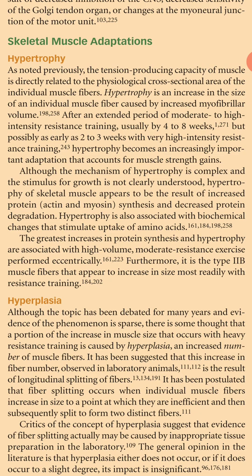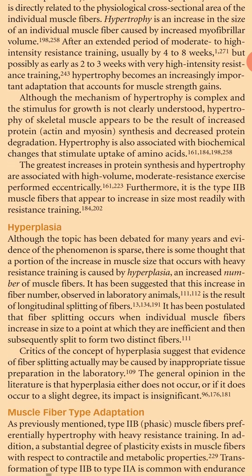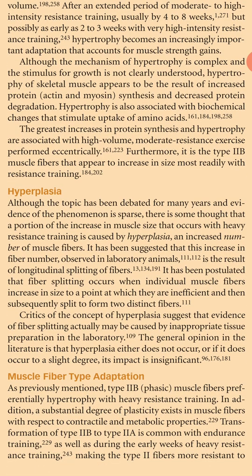Although the mechanism of hypertrophy is complex and the stimulus for growth is not clearly understood, hypertrophy of skeletal muscle appears to be the result of increased protein actin and myosin synthesis and decreased protein degradation. Hypertrophy is also associated with biochemical changes that stimulate uptake of amino acids. The greatest increases in protein synthesis and hypertrophy are associated with high-volume, moderate resistance exercise performed eccentrically. Furthermore, it is the type 2b muscle fibers that appear to increase in size most readily with resistance training.